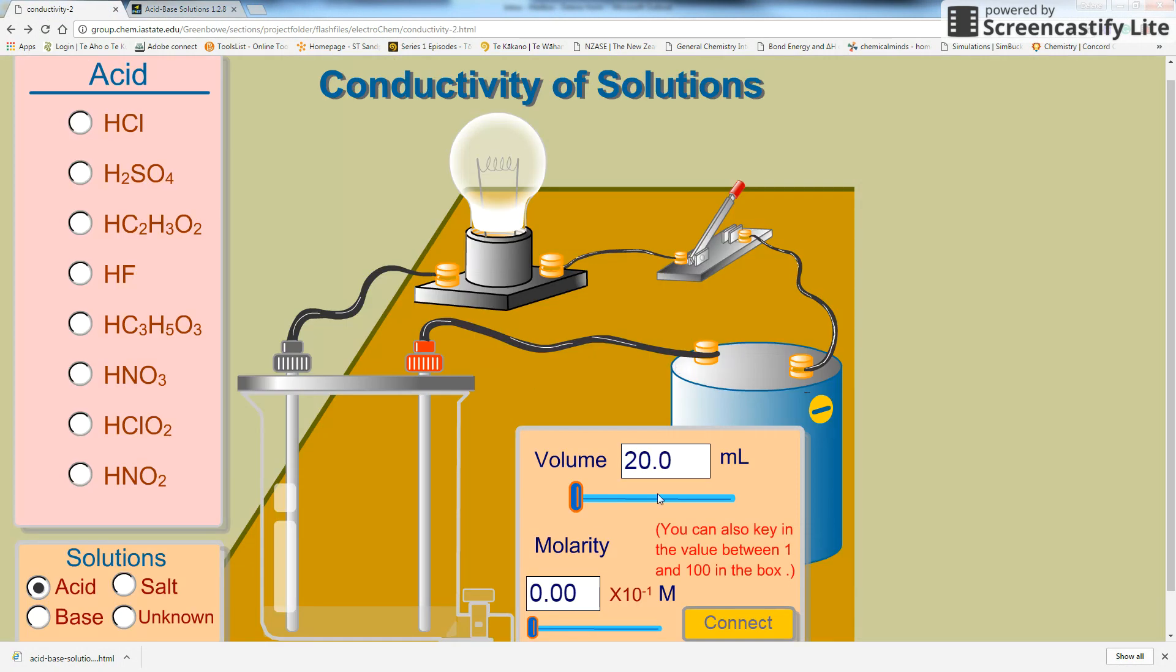So let's go back to this simulation by Greenbow. I've left the standard volume, but you can change the concentration, and I'll just make it five, so it's a 0.5 mole per liter solution. That's what molarity means.